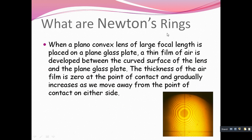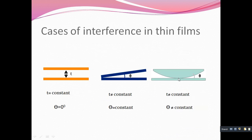Now, what are Newton's rings? When a plano-convex lens of large focal length is placed on a plane glass plate, a thin film of air is developed between the curved surface of the lens and the plane glass plate. The thickness of the air film is 0 at the point of contact and gradually increases as we move away from the point of contact on either side.